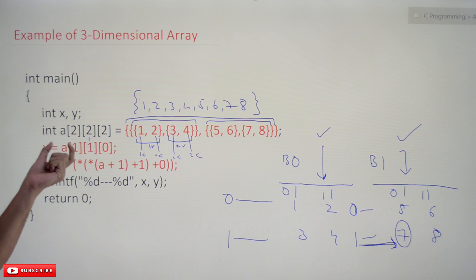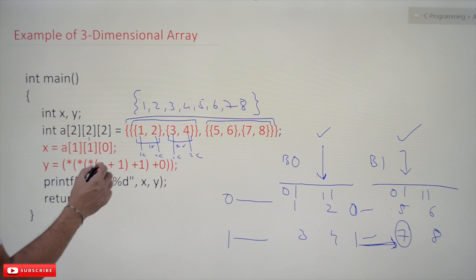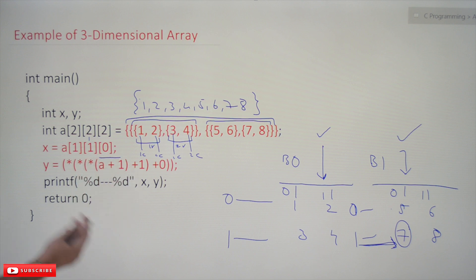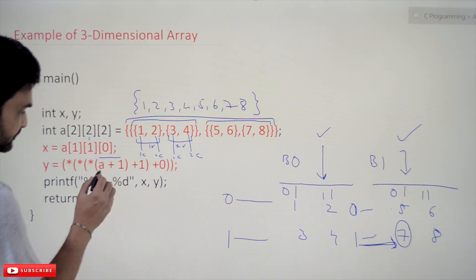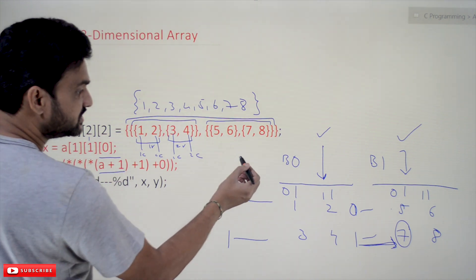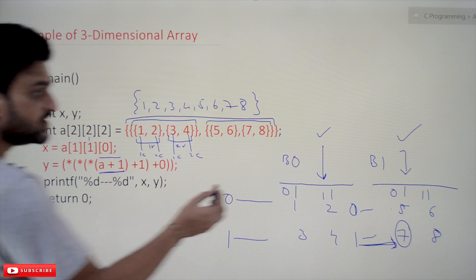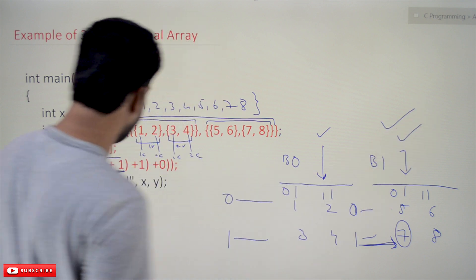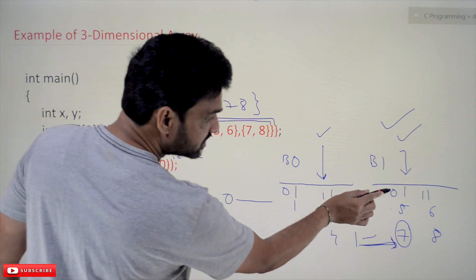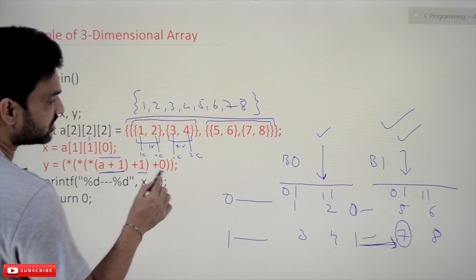The other way is by using array arithmetic. It is `*(*(*(a+1)+1)+0)`. Here, `a+1` means starting address of the array plus 1, which takes us to the second block. Within that block, the first row is accessed, and within that row the column is specified.